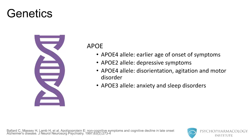Heritability for psychotic symptoms varies between 30 and 61%. The presence of the ApoE4 allele is associated with earlier onset of psychotic symptoms. The presence of the ApoE2 allele is associated with depressive symptoms. Those individuals with dementia who are homozygotes for the ApoE4 allele show greater levels of disorientation, agitation, and motor symptoms. Anxiety and sleep disorders are more frequently seen in individuals who are homozygotes for the ApoE3 allele.